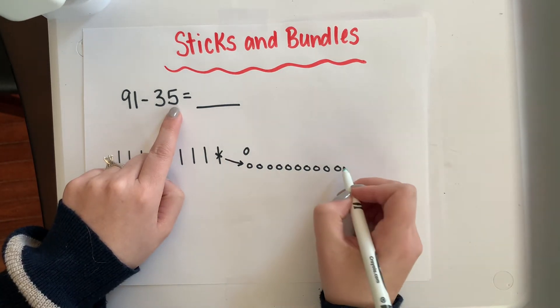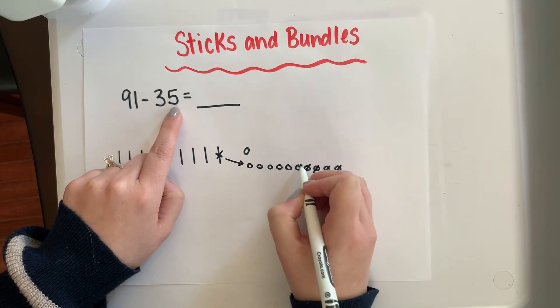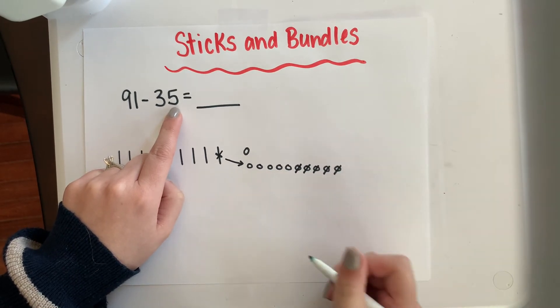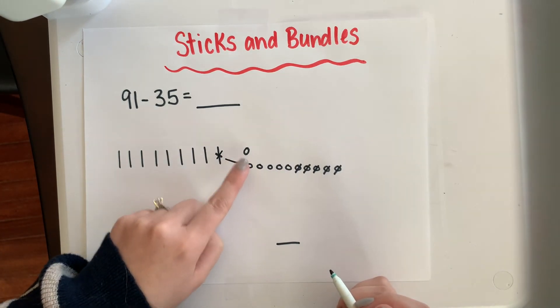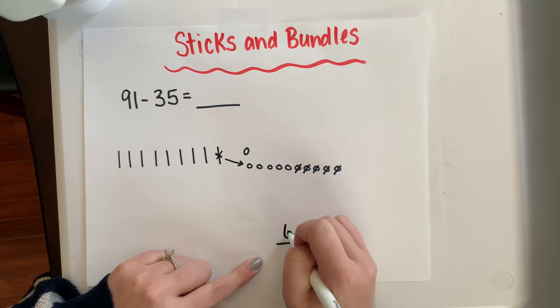now I can take away my 1, 2, 3, 4, 5 ones. What I'm left over with is 1, 2, 3, 4, 5, 6—6 ones.